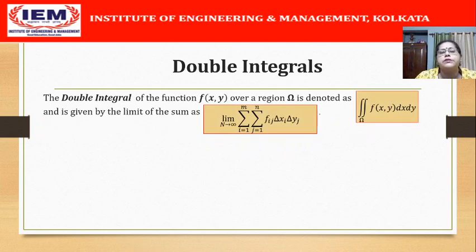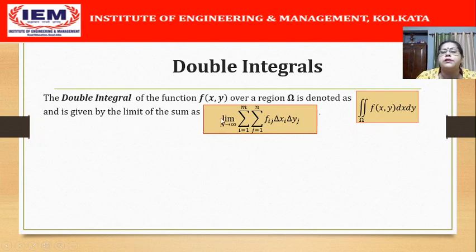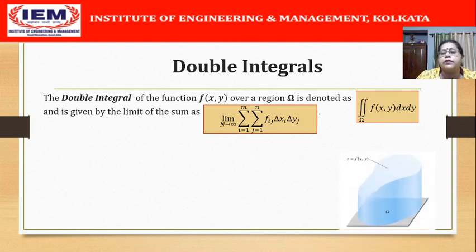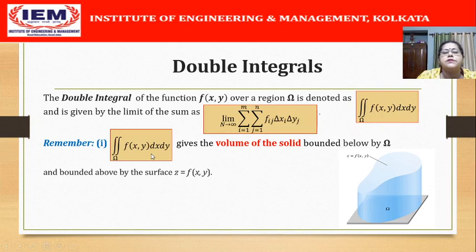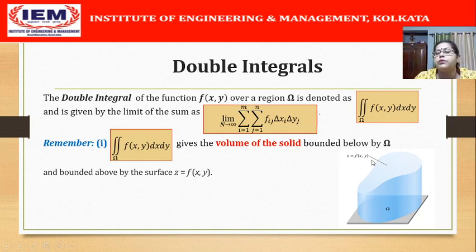The double integral of the function f(x,y) over a region omega is denoted as the symbol double integral f(x,y) dx dy over omega, and this is defined as the limit of this sum: limit n tends to infinity, summation f_ij delta x_i delta y_j where i varies from 1 to m and j varies from 1 to n. The double integral f(x,y) dx dy represents the volume of the solid bounded below by the region omega and above by the surface z = f(x,y).